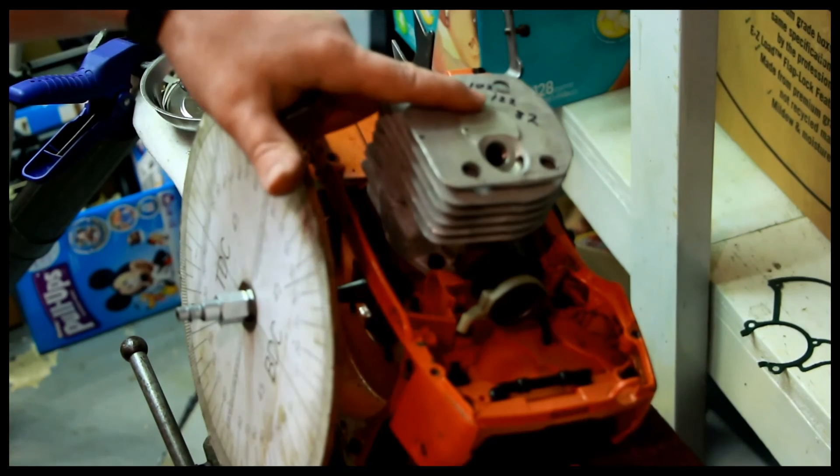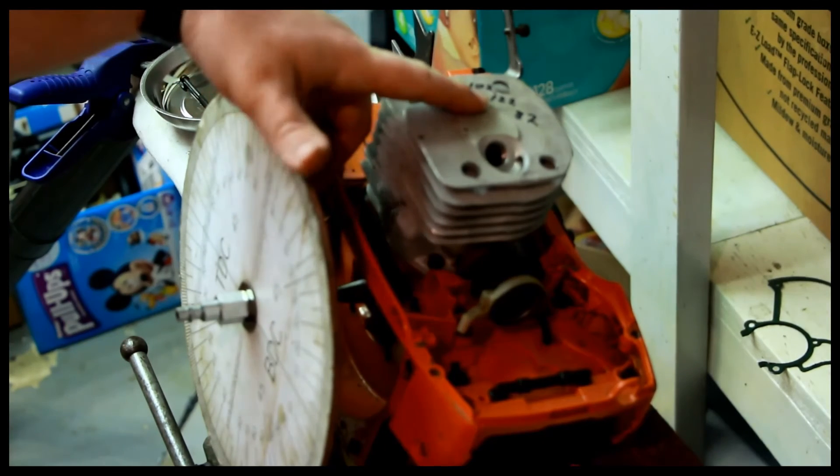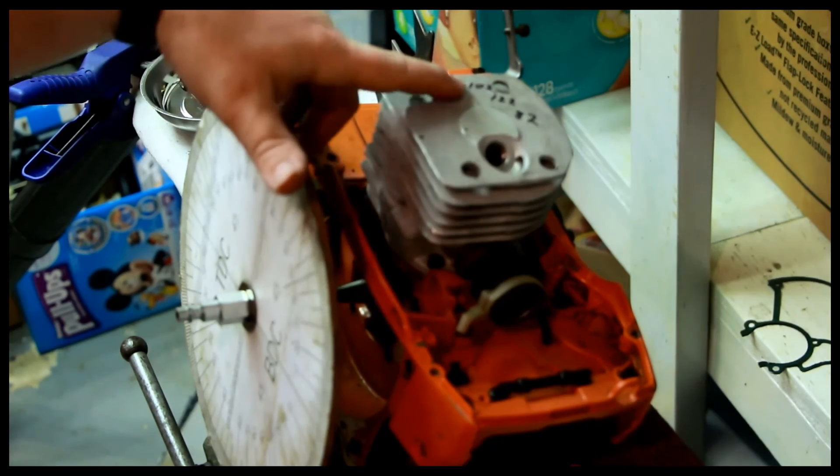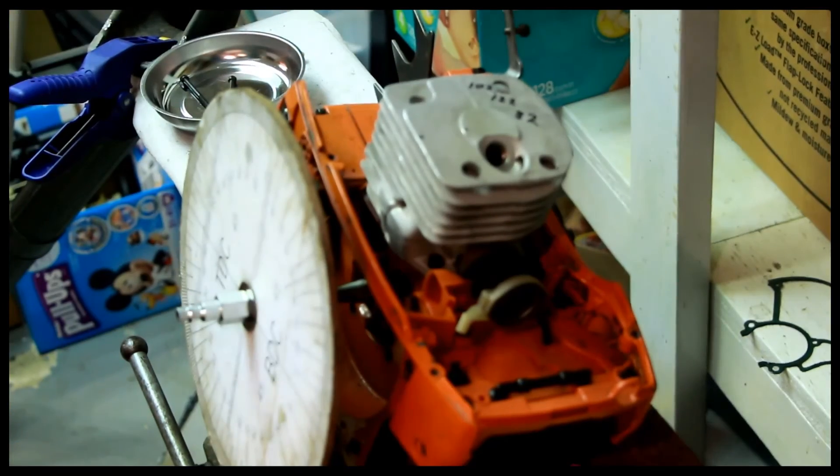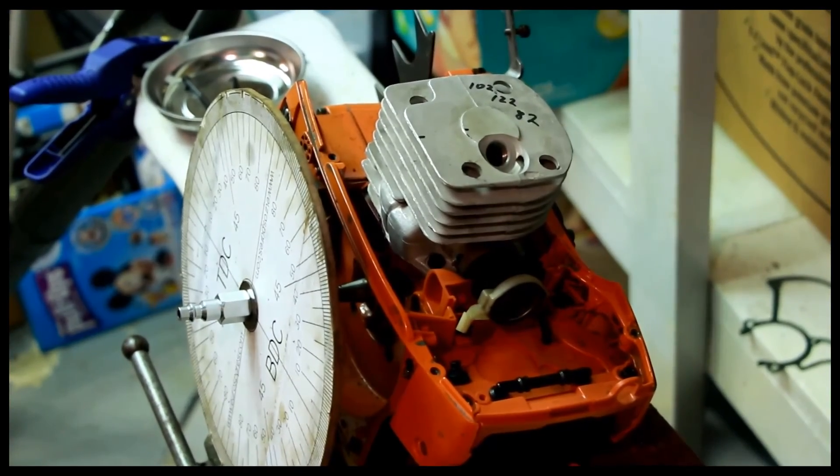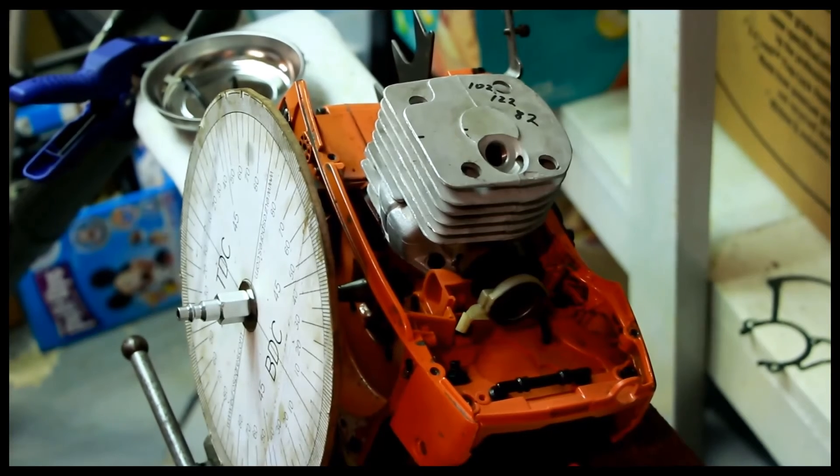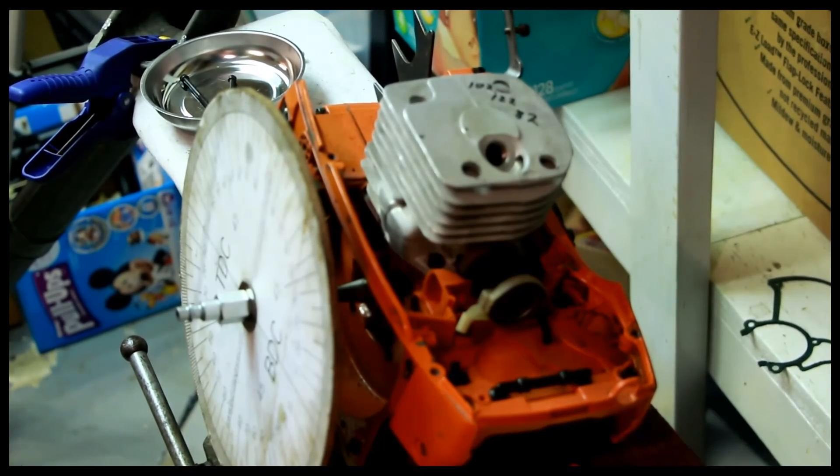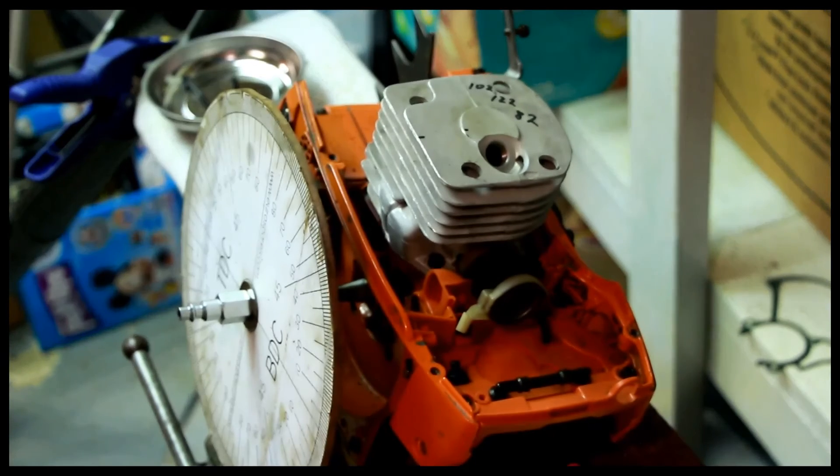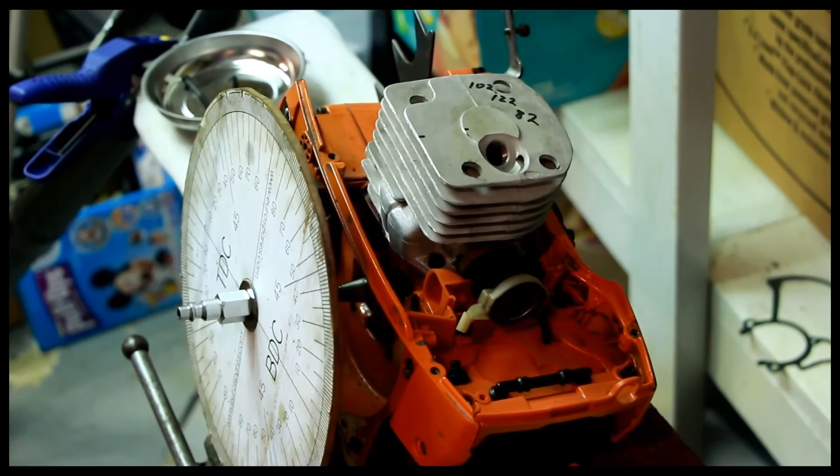For transfers, 122 is this saw. Between 122 to 102 is what's called blowdown. That's the time between where the exhaust opens and where the transfer ports open.